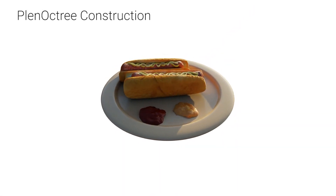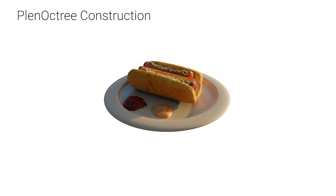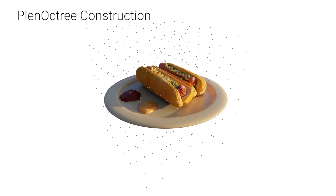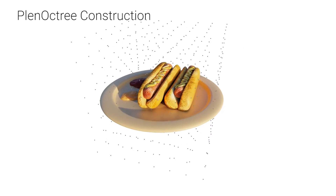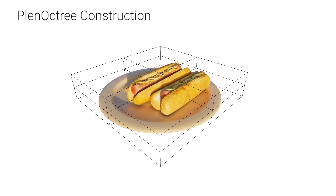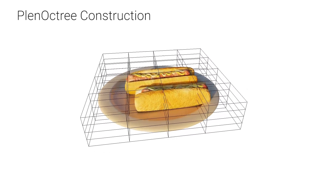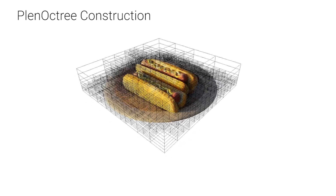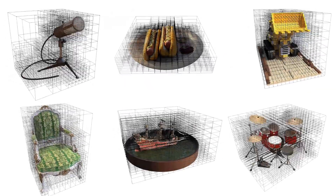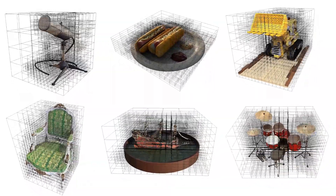With our modified NeRF model, we construct a planar tree to enable fast rendering. We begin by densely sampling the network on a grid. A planar tree is an octree which contains spherical harmonics coefficients at the leaves. We apply a threshold to the samples to filter the points, allocating tree leaves where dense. This forms a discretized version of the NeRF, retaining view dependence.